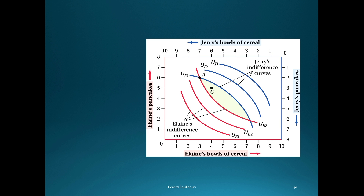So changing from allocation A to allocation C is a Pareto improvement — a change in allocations that makes at least one of the two people better off without making either of them worse off. In fact, in this example, changing to allocation C makes both people in this market better off.